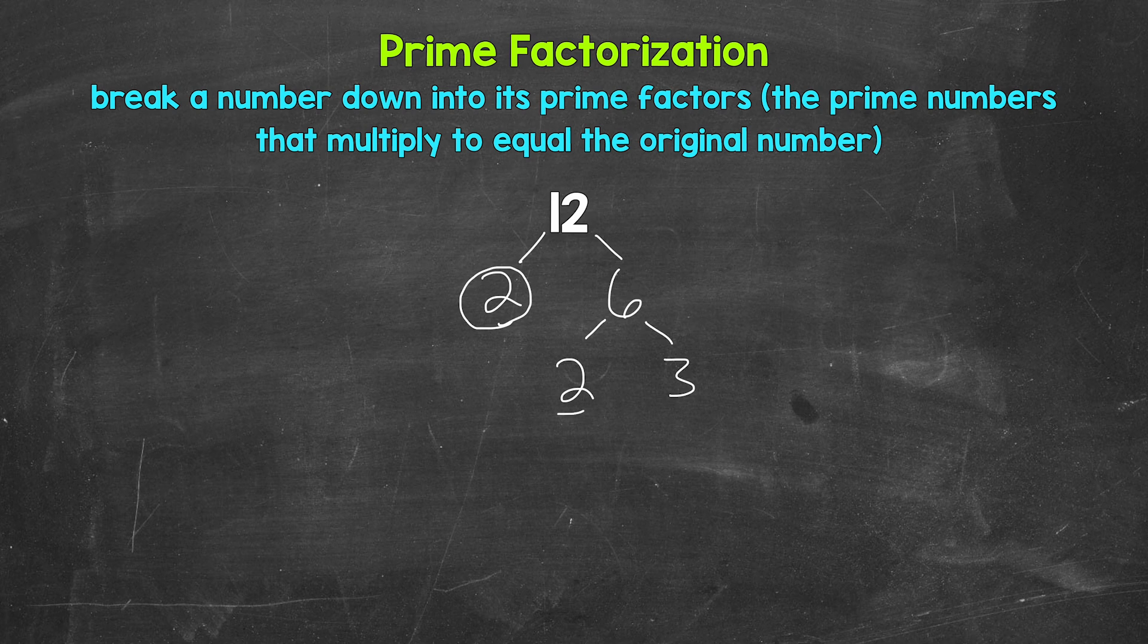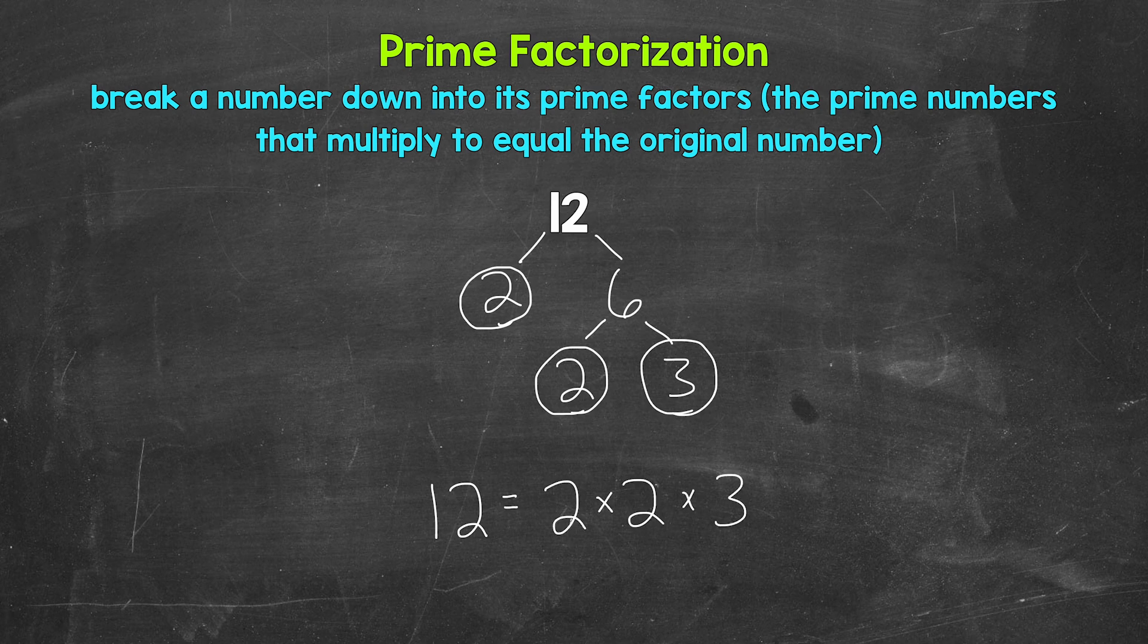Now both 2 and 3 are prime numbers, so we are done here and here. And that's the prime factorization of 12. We can't break anything else down any further. We have all prime numbers. So we can write this out as 12 equals, and then we can put our prime factors in order from least to greatest here. And we are multiplying them. So we have 2 times 2 times 3.